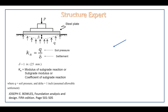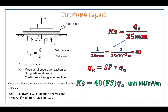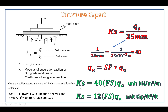Let's review our previous tutorial. We talked about soil stiffness using methods such as Boswell. You can read more detail in Joseph E. Boswell Foundation Analysis and Design, 5th edition, pages 501 and 505. The soil stiffness determined by Boswell is equal to 40 multiplied with the ultimate stress, or 40 multiplied with 75 times the allowable stress of soil.